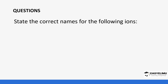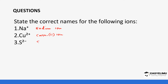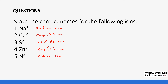Practice questions - state the correct names for the following ions. Na+ is sodium ion - these are cations and do not change their names. Cu2+ is copper(II) ion because it is a transitional element and we specify the charge. S2- becomes sulfide, as it is an anion with '-ide'. Zn2+ becomes zinc(II) ion - a transitional element. N3- becomes nitride, as it is an anion. Cl- becomes chloride ion.